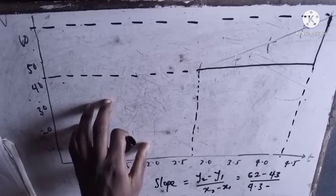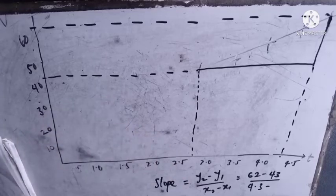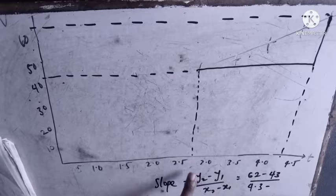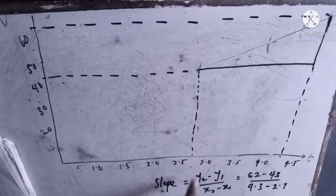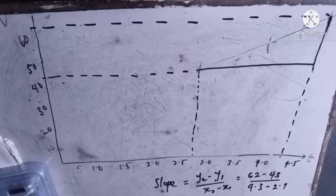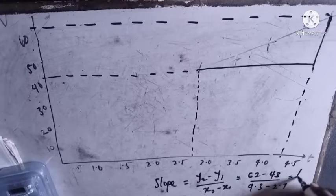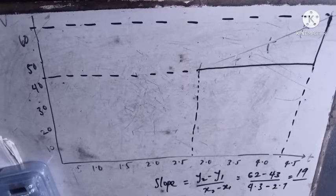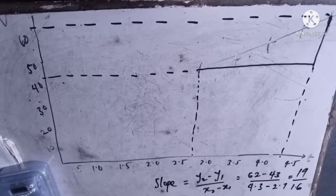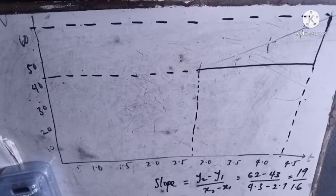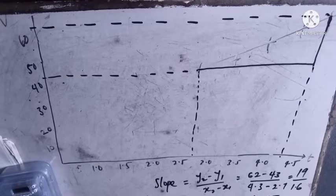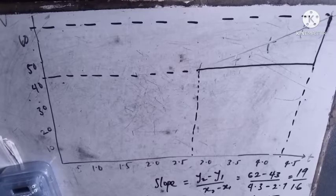When you connect them this way, you look for your slope. Your slope is y2 minus y1 over x2 minus x1. What's your y2? 62. Your y1? Let's say this is 43. So 62 minus 43, that's 19 over 4.3 minus 2.7, that's 1.6, which gives you 11.875.